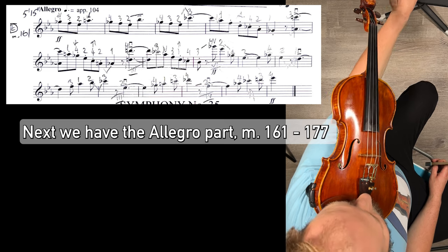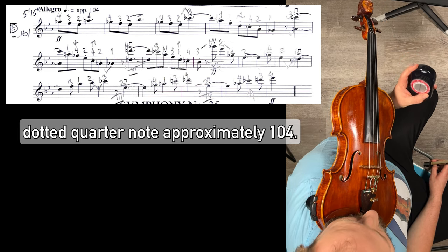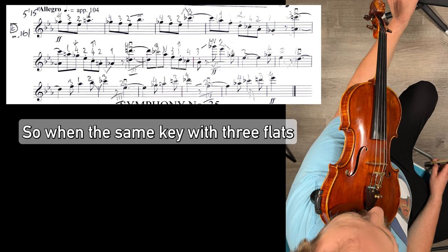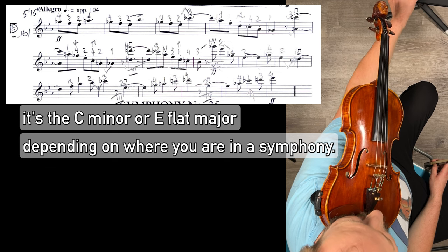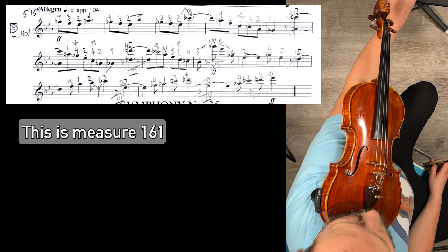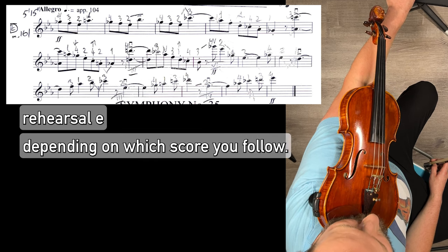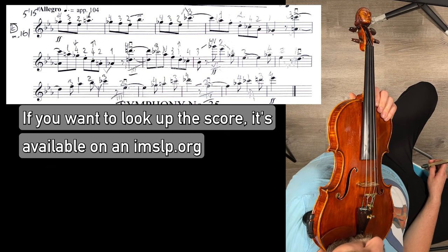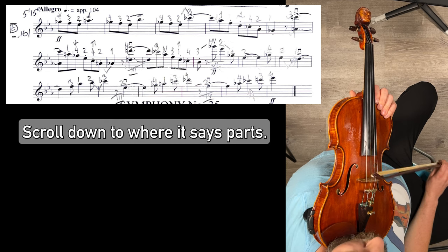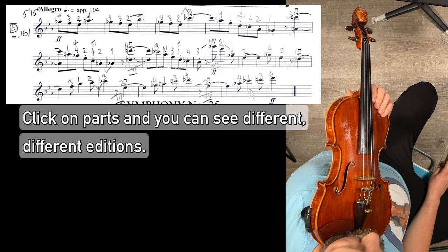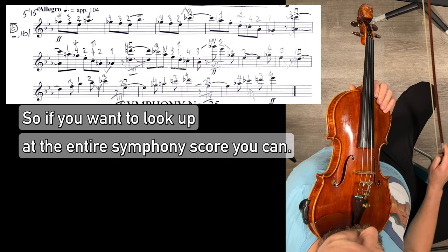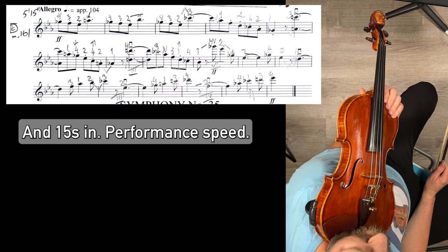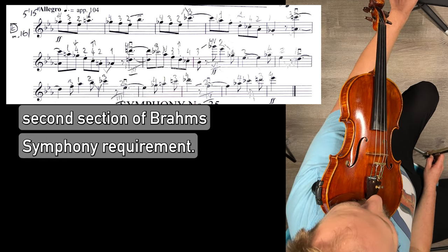Next we have the Allegro part. Dotted quarter note, approximately 104. So we're going to set to 104. So we're in the same key with three flats. This is C minor. What, E flat major depending on where you are in the symphony. This is measure 161, rehearsal E, depending on which score you follow. If you want to look up the score, it's available in imslp.org. You type in symphony one Brahms. Scroll down to where it says parts. Click on parts and you can see different editions. So if you want to look up the entire symphony score you can. But this is measure 161 of the first movement. If you listen to most recordings, it's going to be about 5 minutes and 50 seconds in. Performance speed. Second section of Brahms symphony requirement.